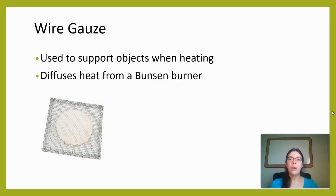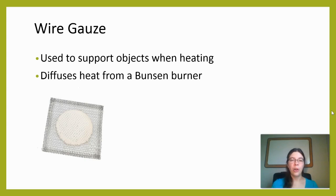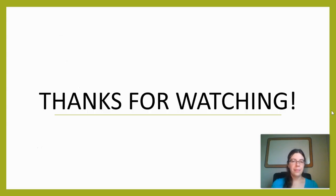We also have something called wire gauze, which can be used to support objects when heating them. It can also help diffuse heat from a Bunsen burner — if you don't want heat concentrated in one small location, wire gauze can spread it out a bit more.